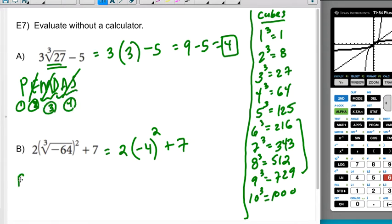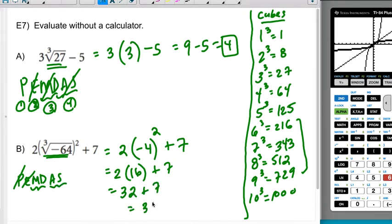So if we go ahead and do PEMDAS here. So technically this is an exponent, but it's also the inside of the parentheses, so we'll do that first. Then we'll deal with the next exponent, which is the square. So we're going to get that this is 2 times 16 plus 7. Then we'll do our multiplication and division, which is how I get 32 plus 7. And then I end on addition and subtraction, which is how I get 39.